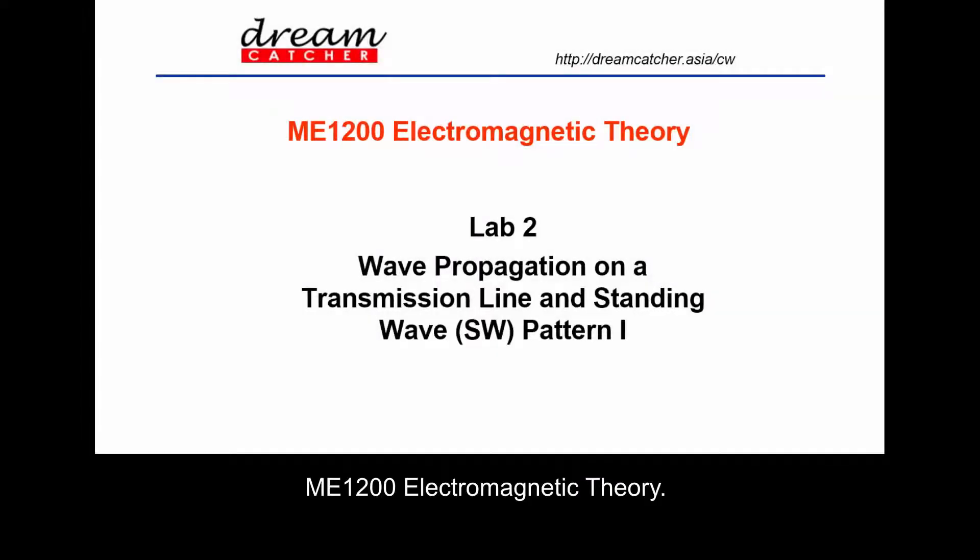ME1200 Electromagnetic Theory Lab 2: Wave Propagation on a Transmission Line and Standing Wave Pattern. The objectives of this lab are to observe the effect of a guided electromagnetic wave on a transmission line, a microstrip in this case.